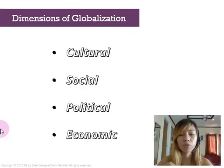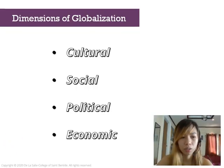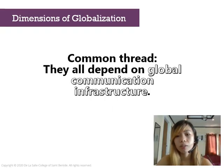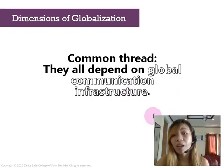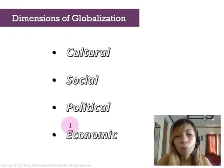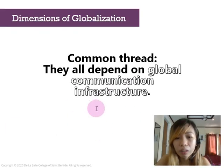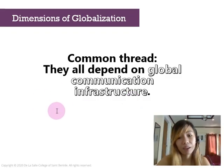What is common among all these dimensions of globalization? The answer is they all depend on global communication infrastructure. These dimensions would not be possible without global communication infrastructure because this actually makes everything possible.